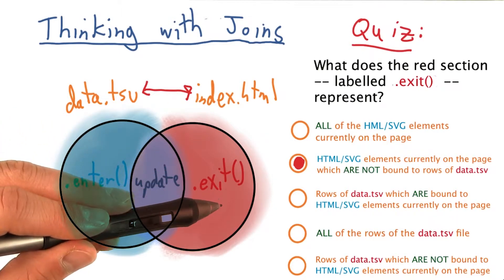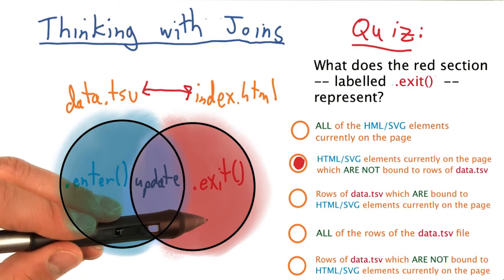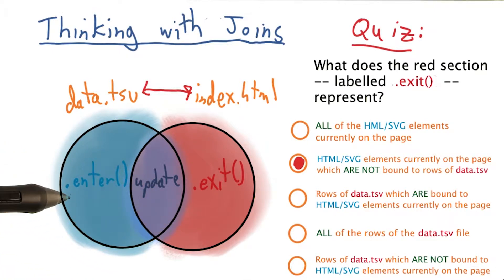The .exit selection, called in just the same way as .enter after a data bind, represents something of the inverse of .enter.